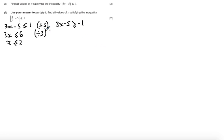I can do exactly the same operations with the second inequality, so adding 5 to both sides I get 3x is greater than or equal to minus 1 plus 5, which is going to be 4. And then I'm going to divide both sides by 3 so I get x is greater than or equal to 4 over 3.